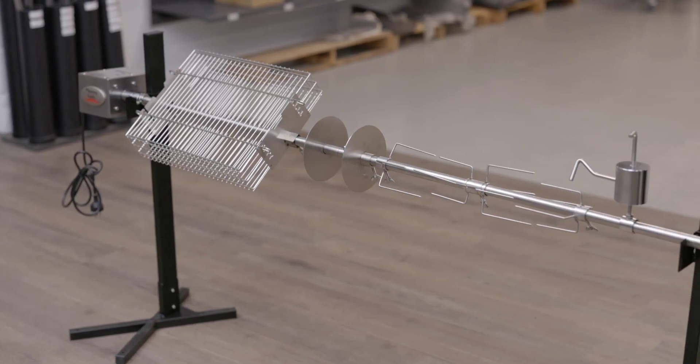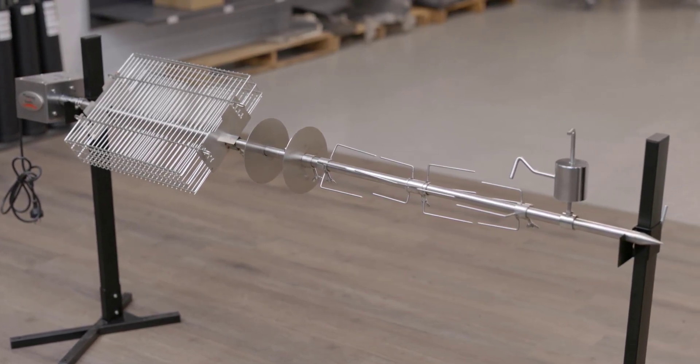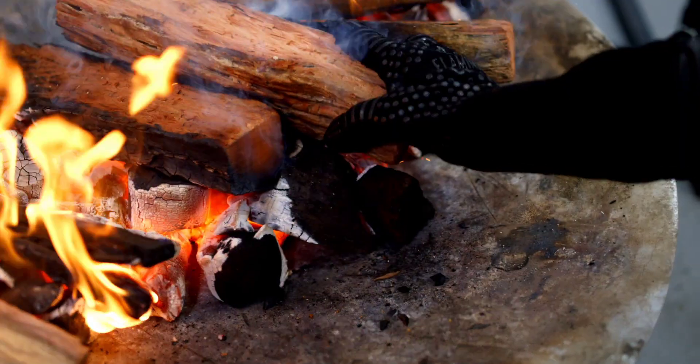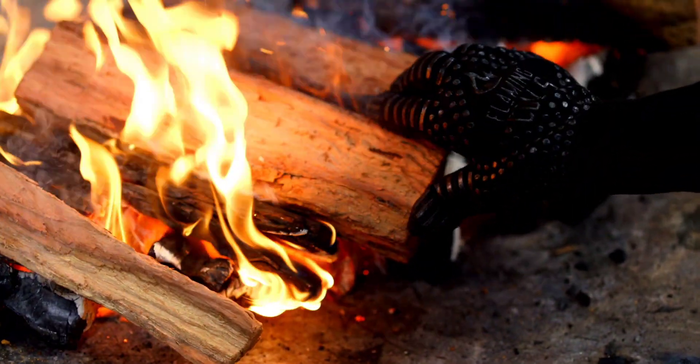Counterbalance weights to help balance whole animals, leg brackets to attach the legs of the animal to the skewer, and baskets to cook pork belly, chicken wings, steaks, ribs, fish, and so much more. You can also upgrade the skewer to a solid single-piece skewer.